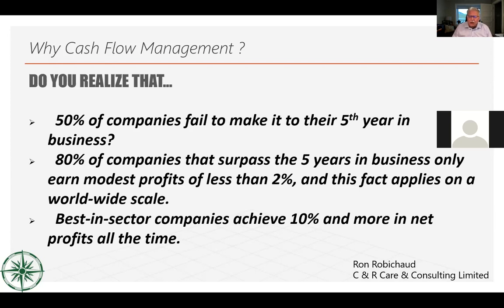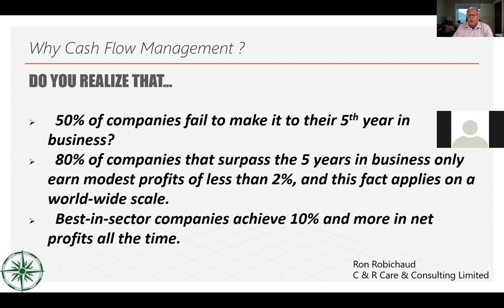The only reason companies don't make it to the fifth year is simply that they're not making enough money, not enough profit — they can't pay themselves, can't put food on the table, and can't reinvest in their business. In Canada, we have about 2.4 million registered businesses and about 1.1 million with paid employees. Of those, 54% have less than four employees, 75% have less than 10, 87% have less than 20, and 95% have less than 50.